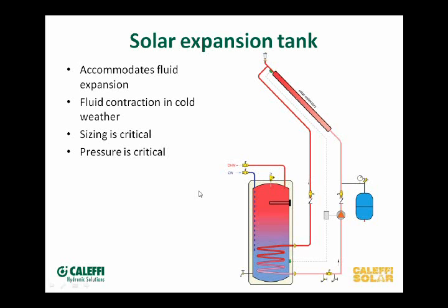I ran a calculation on a system that had 90 gallons of solar fluid in it — it required a 40-gallon expansion tank. The collectors held about a gallon and a half each and there were quite a few of them. That's the size of a typical water heater just as an expansion tank. The tank has to be able to handle a much bigger volume of expansion.